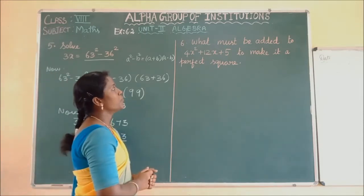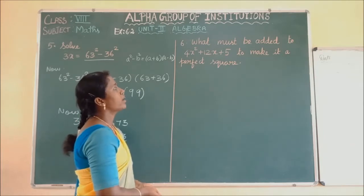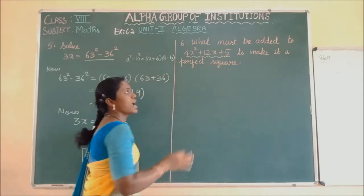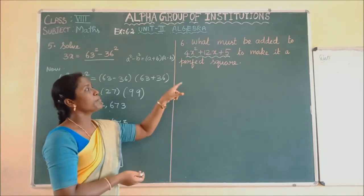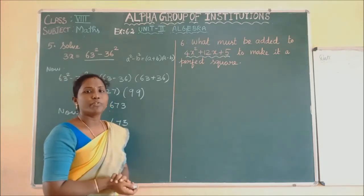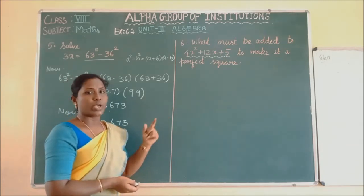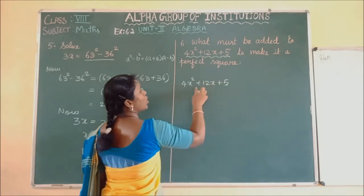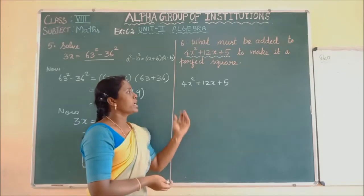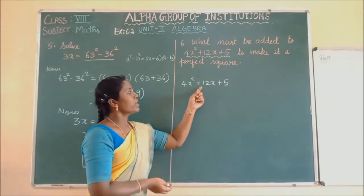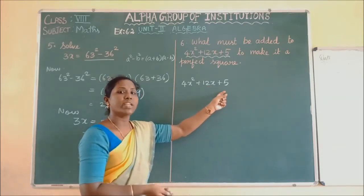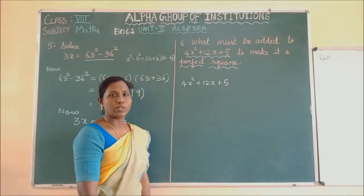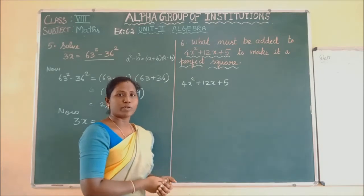Next question: What must be added to 4X square plus 12X plus 5 to make it a perfect square? We have to add some number to the given expression so that it becomes a perfect square — that is, it should be in the form of a square. All terms here are positive, so it can be written as A plus B whole square.